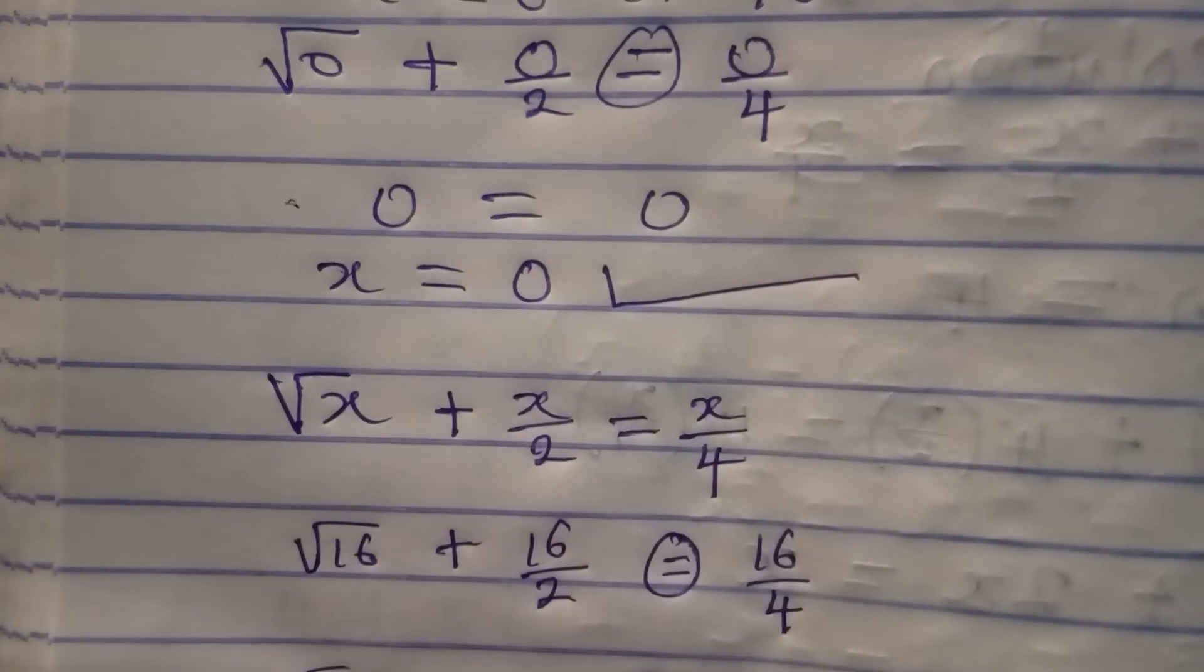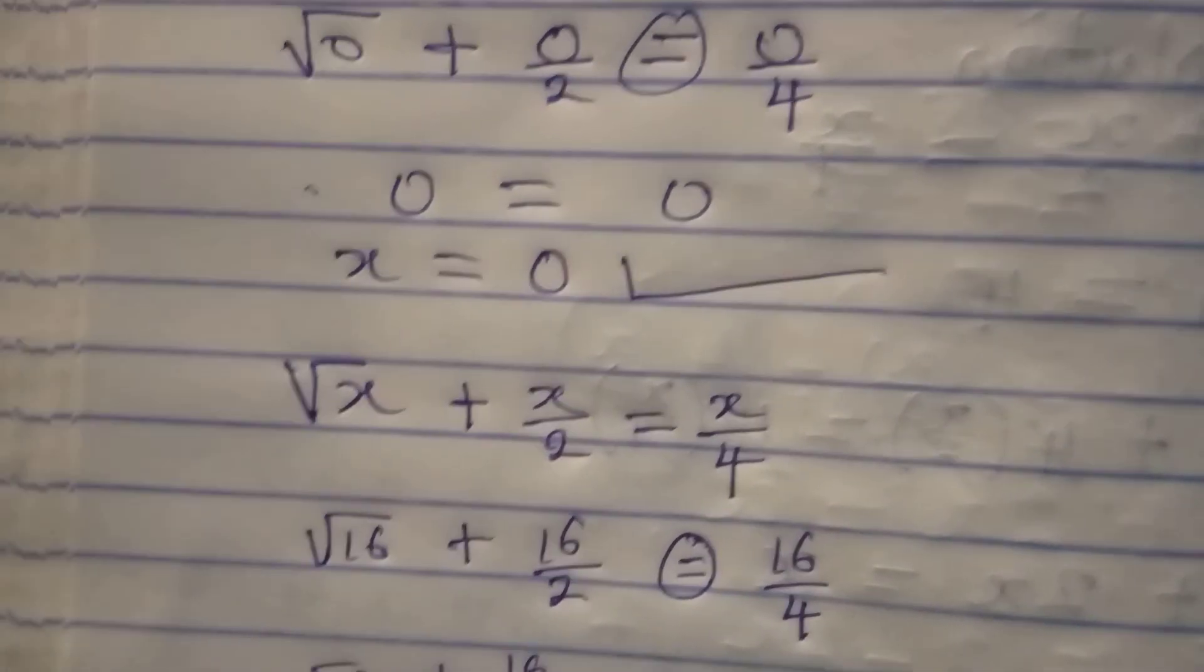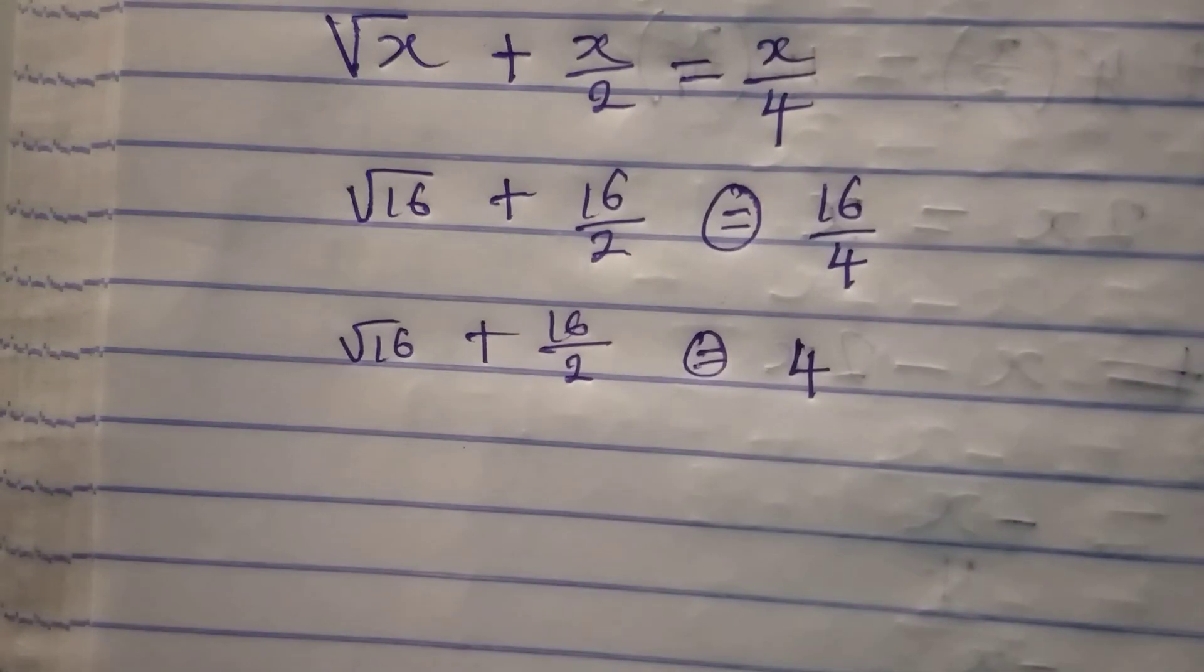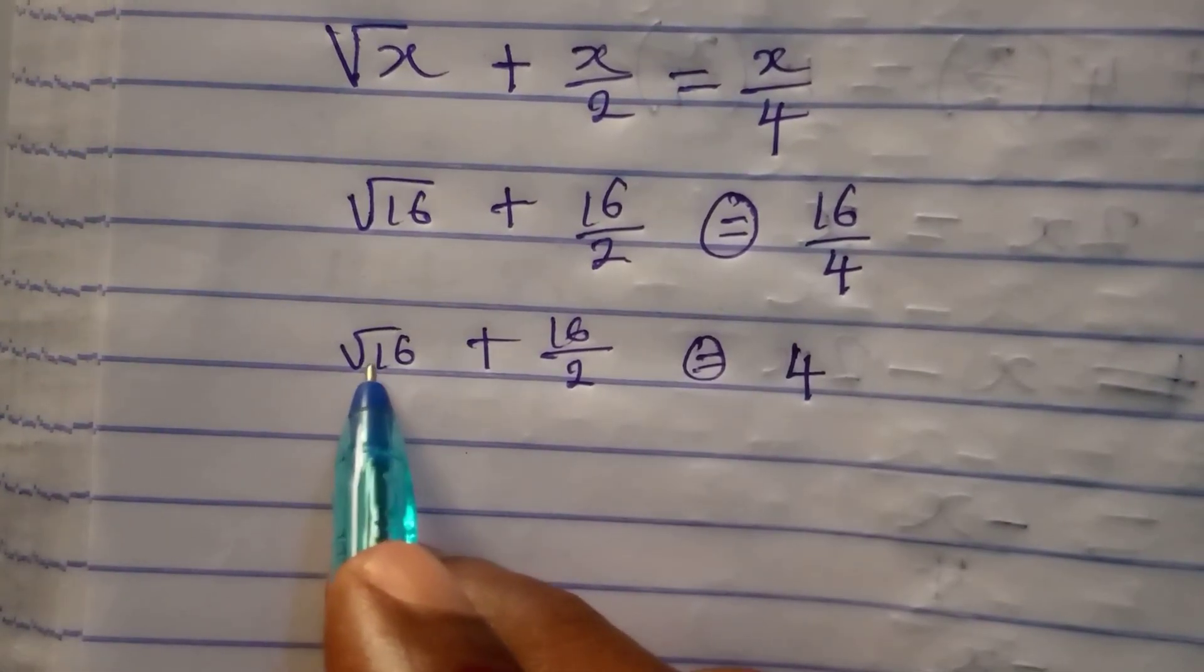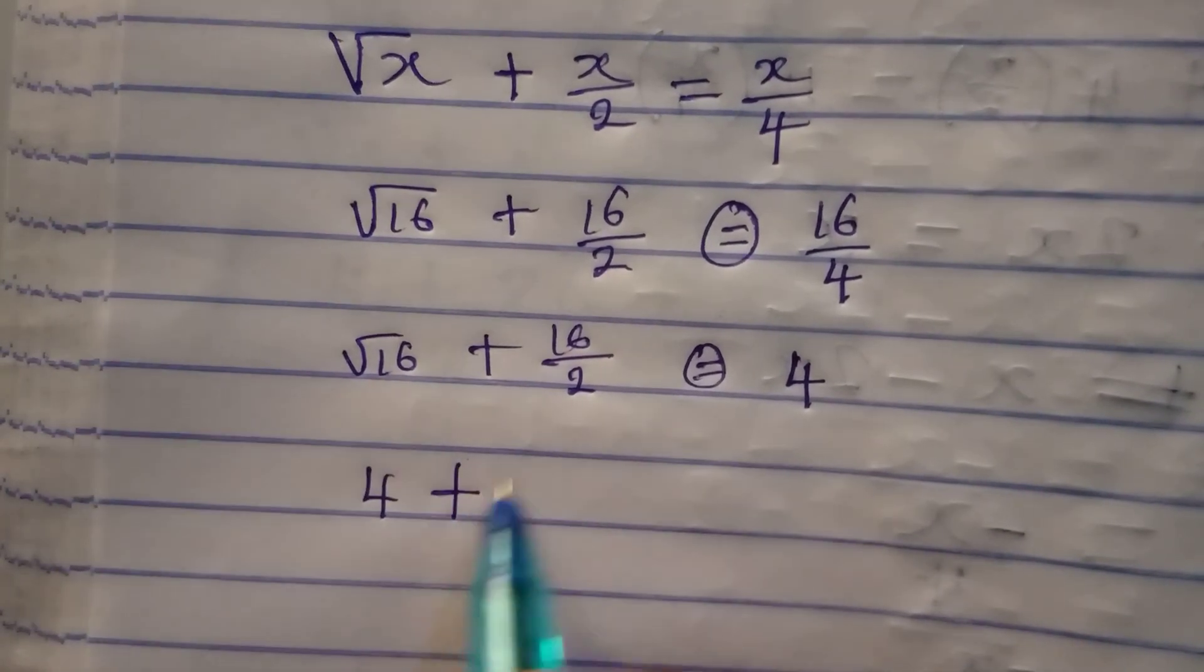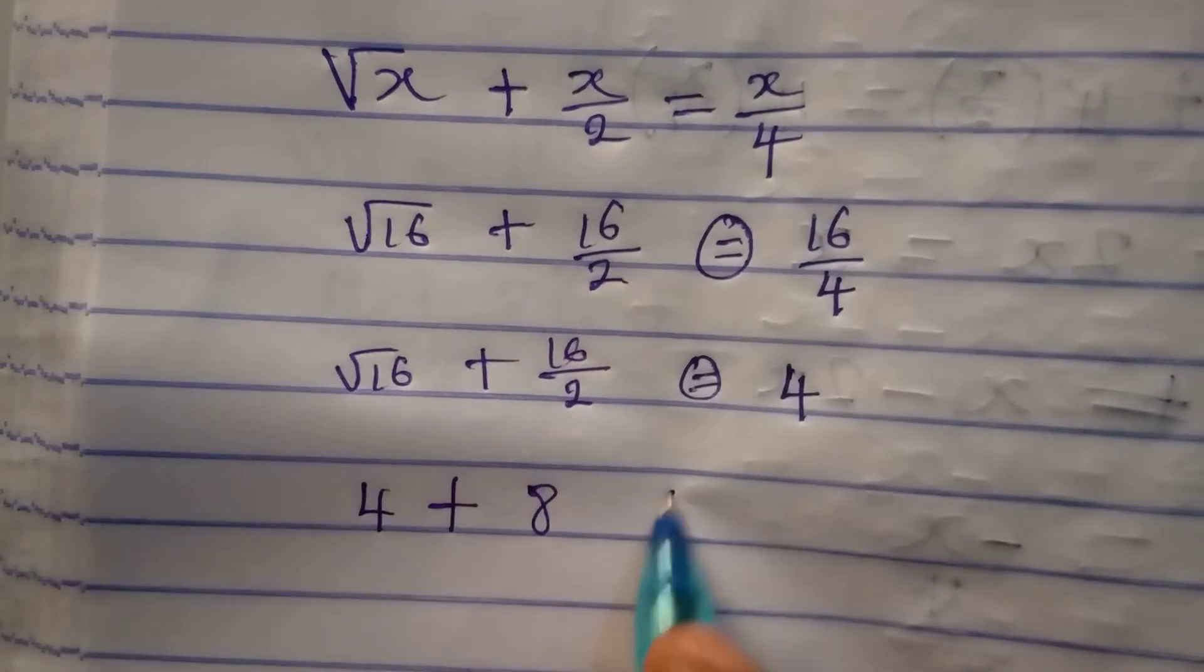Will root 16 plus 16 over 2 give us 4? We can't answer that until we process. Now 16, root 16 is giving us 4 plus 16 over 2 is giving us 8.